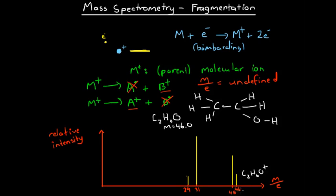We have to use common sense and an understanding of the chemical structure to figure out which fragments are possible from a given molecular ion. So if we have a mass-to-charge ratio of 45, the only way we could get that is by losing a hydrogen. In theory, any one of those hydrogens could be lost, so we know this peak is going to be caused by a particle with the formula C₂H₅O⁺.